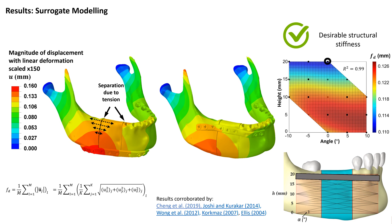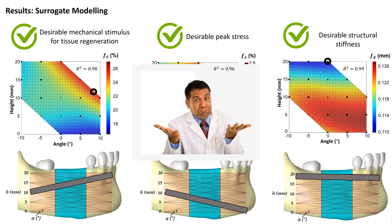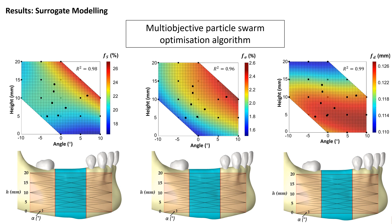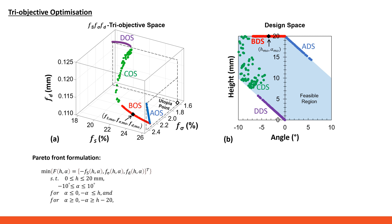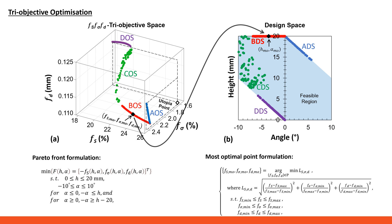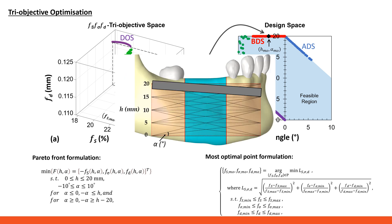From a surgical planning perspective, our design objectives are competing with one another. So rather than a surgeon trying to weigh up these competing criteria, we use a multi-objective particle swarm optimization algorithm to aid the surgeon in determining the optimal solution. The algorithm determines a Pareto front of optimal solutions, as shown on the left-hand side image. To find the most optimal of these solutions — representing the best trade-off between the different competing design objectives — we minimize a cost function shown on the slide. When we plot this most optimal point back into design space, this corresponds to a plate height of 20mm and a small depression angle of minus 3.5 degrees. This is where computer-aided surgical planning would recommend the fixation plate be placed.